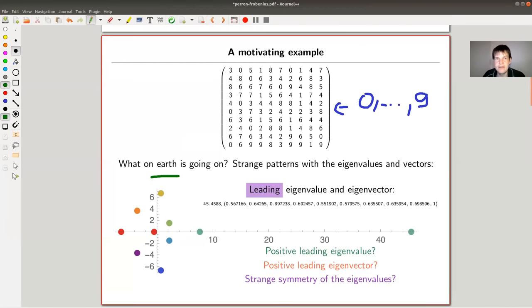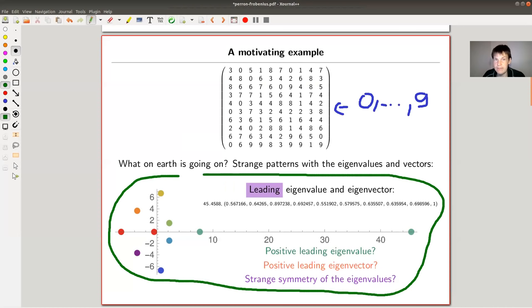And this will be the Perron-Frobenius theorem. So here are strange patterns with the eigenvalues and eigenvectors. So in this plot here, you see the eigenvalues of that matrix and they are complex numbers. So this is like the complex plane. And I just plotted the eigenvectors. And the things to observe is there's a leading eigenvalue. It's huge. It's much bigger than everything else. That's something like 45 something and it's leading. It's real positive and much bigger than anything else. And that's already pretty surprising if you think about it, because it's kind of a random matrix. But it gets much better.